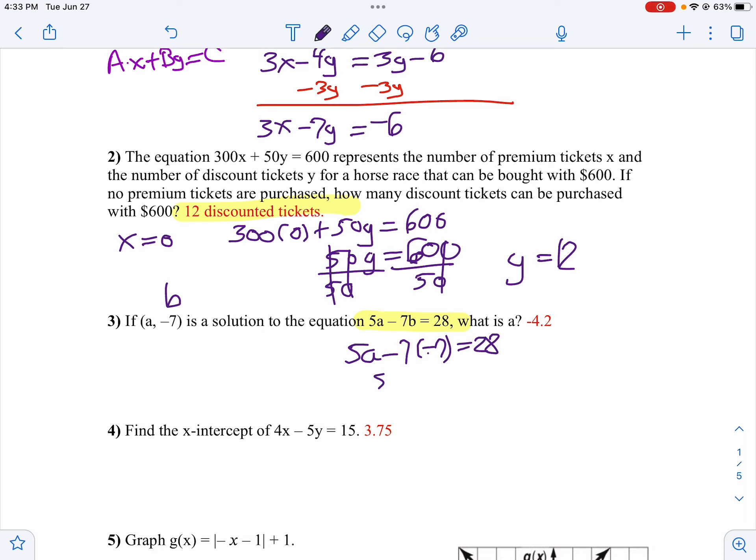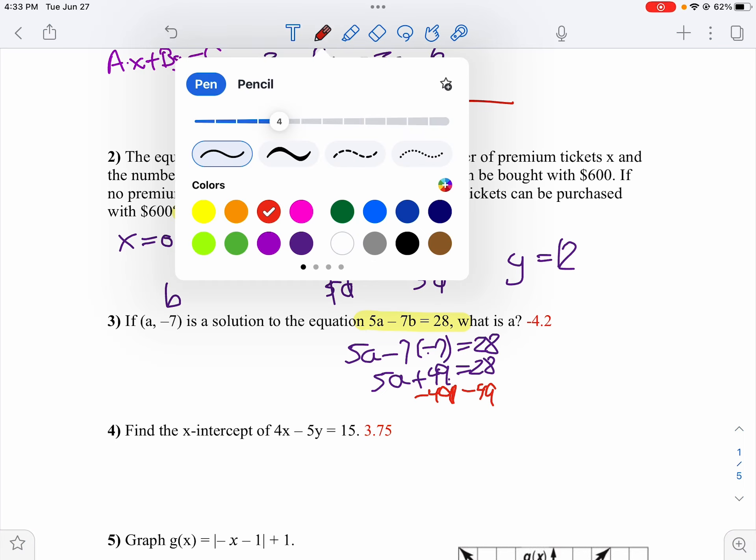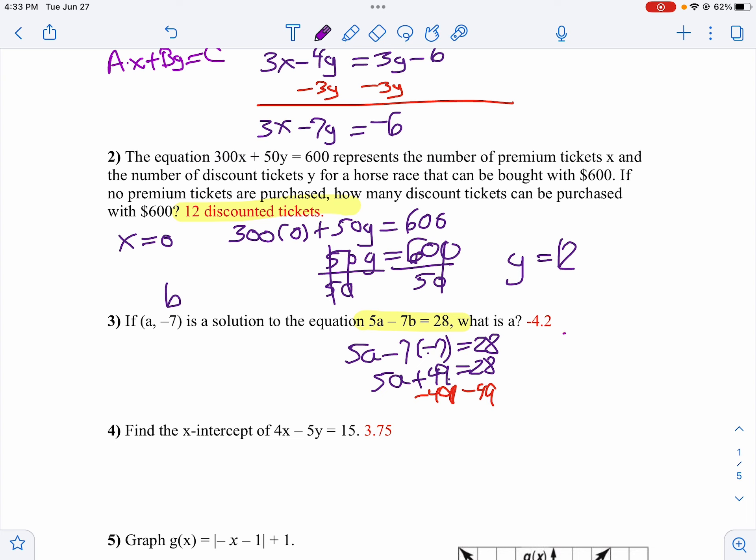Then we're going to go 5A plus 49 equals 28. Well, let's subtract 49 from both sides. We're not out of room here, so I'm going to write it to the side. So then we're going to get 5A equals, that's 28 minus 49 is going to be negative 21, isn't it?